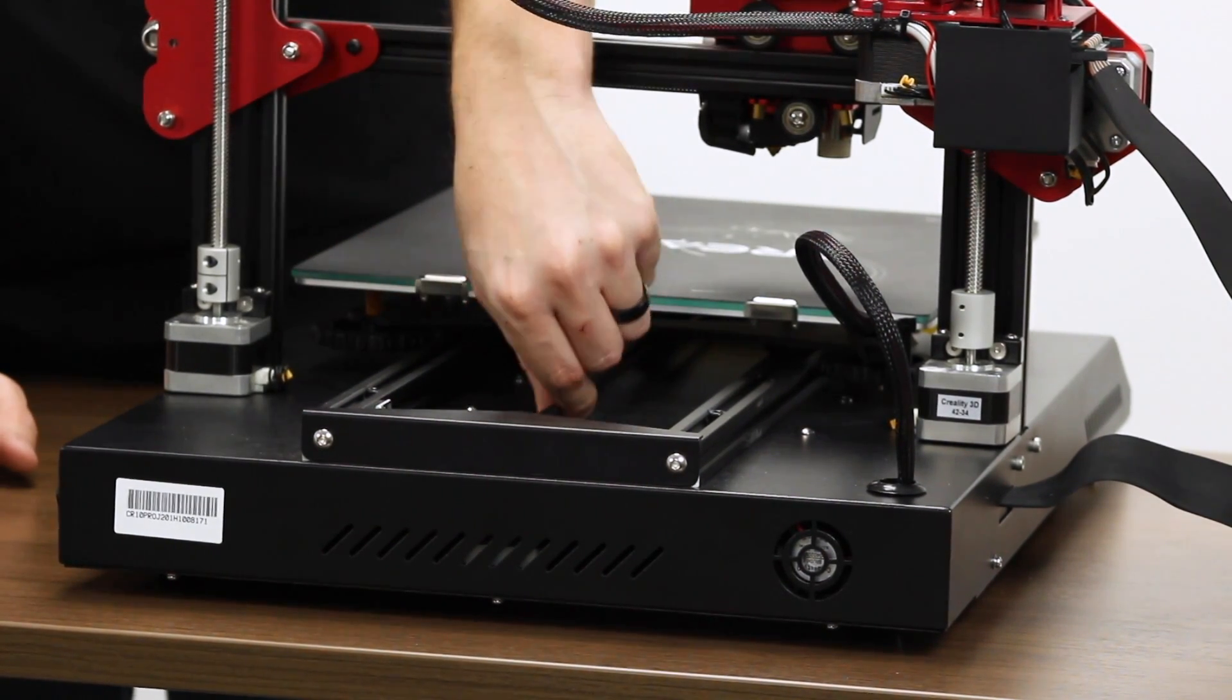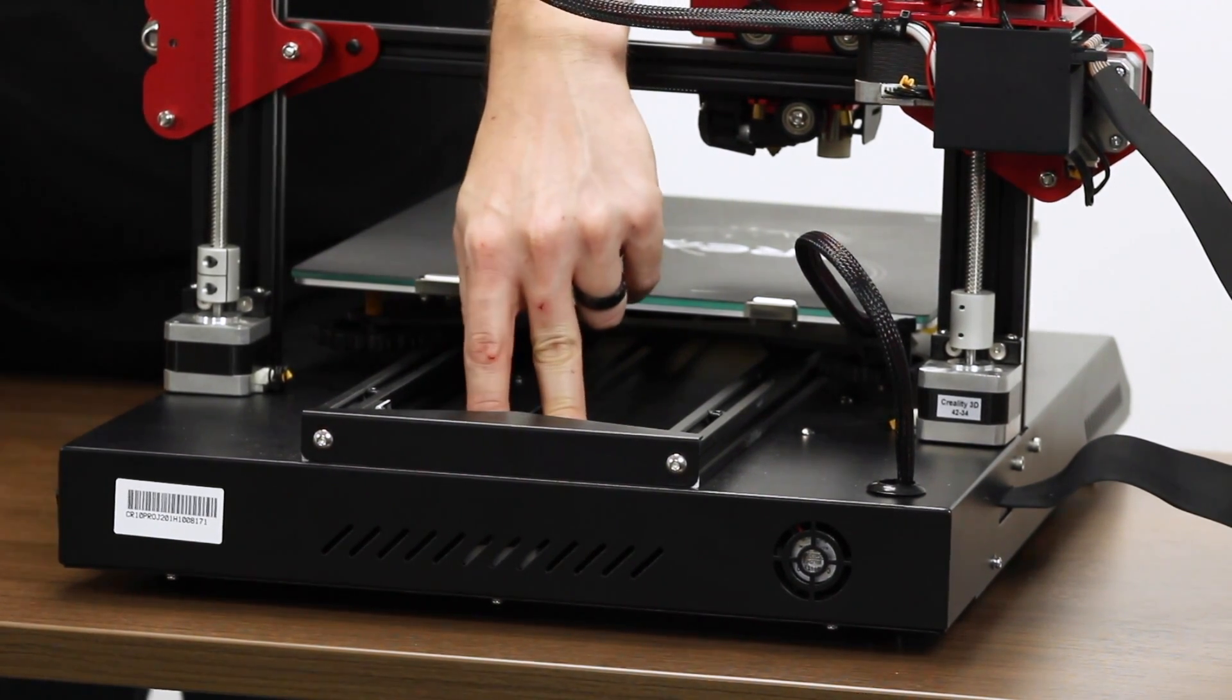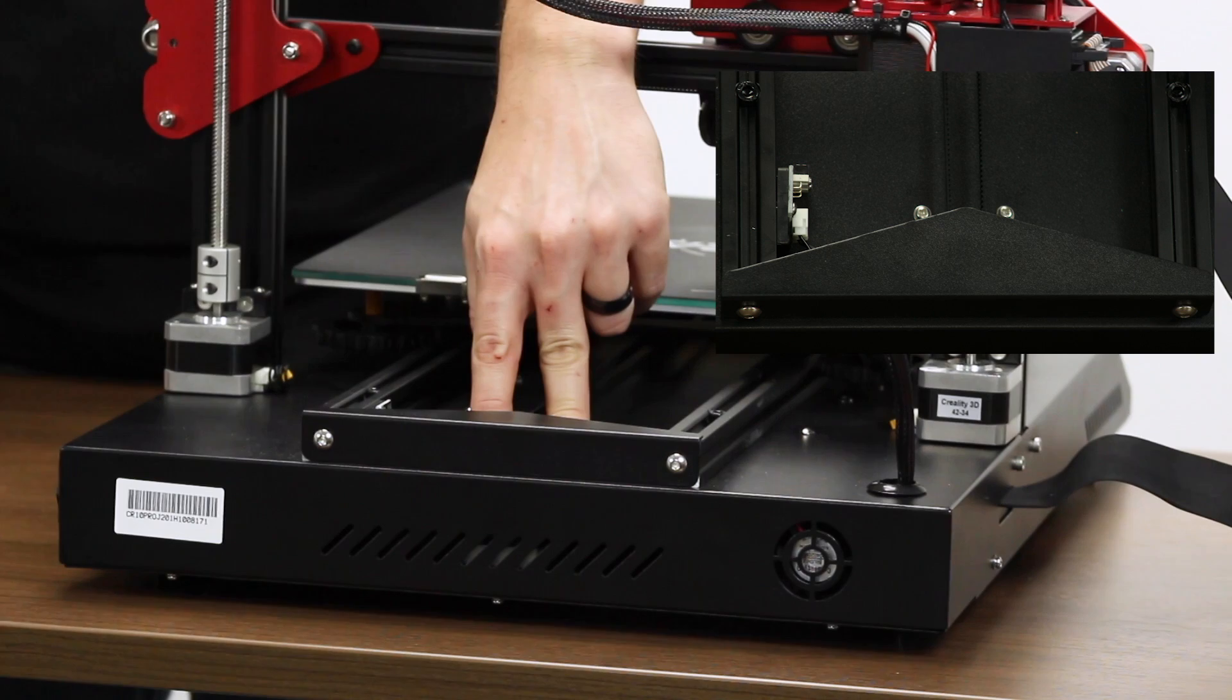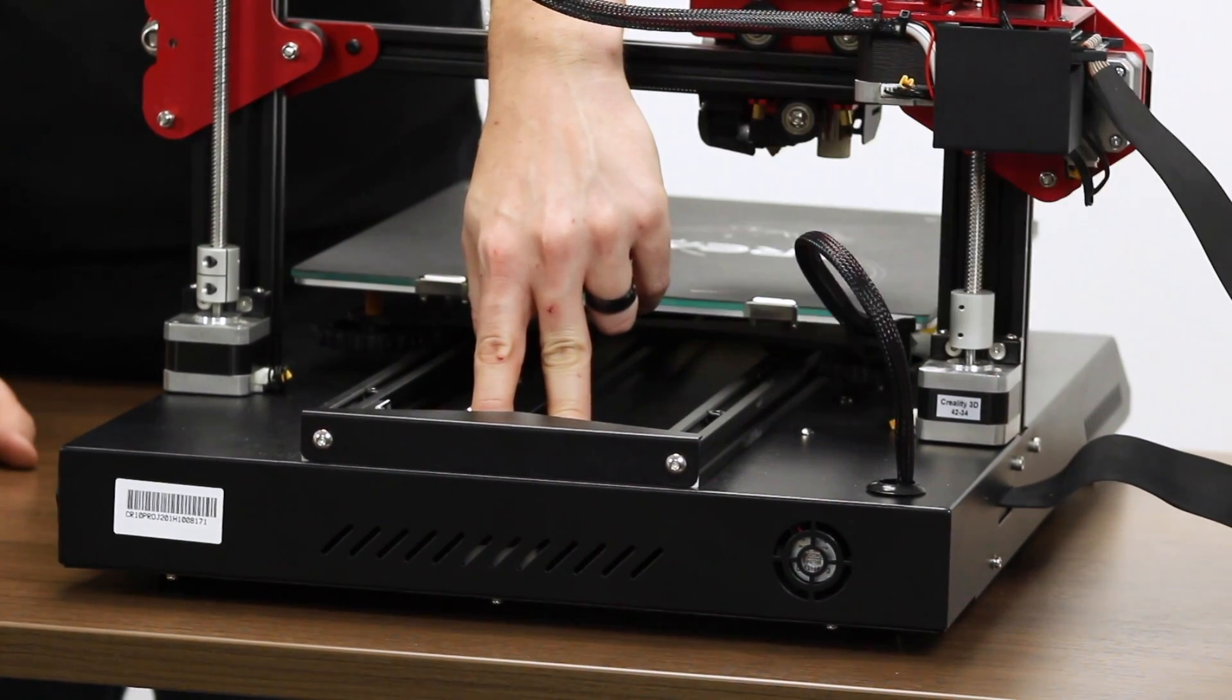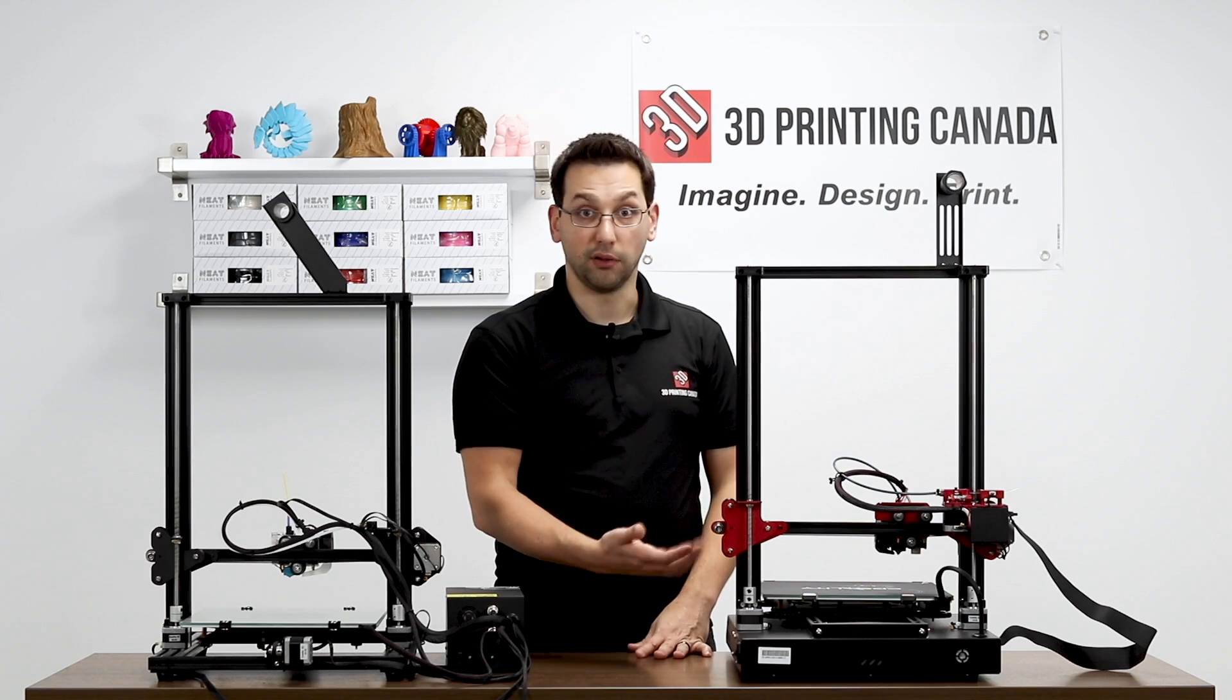And to increase the tension on this belt, this is the motor that you would loosen the screws on and slide back. You'd have to open the bottom of the case to put pressure on it backwards. But that would be how you control the Y-axis belt tension.